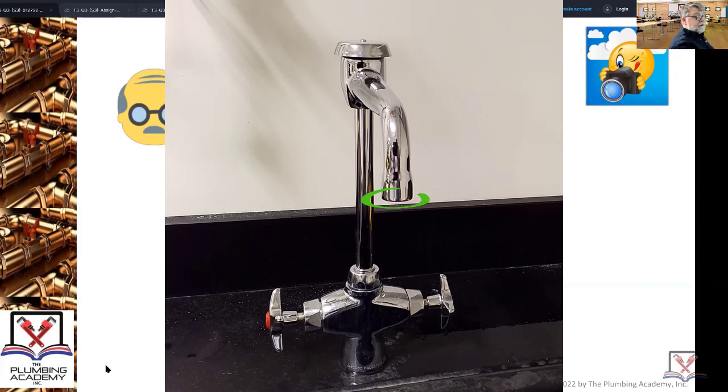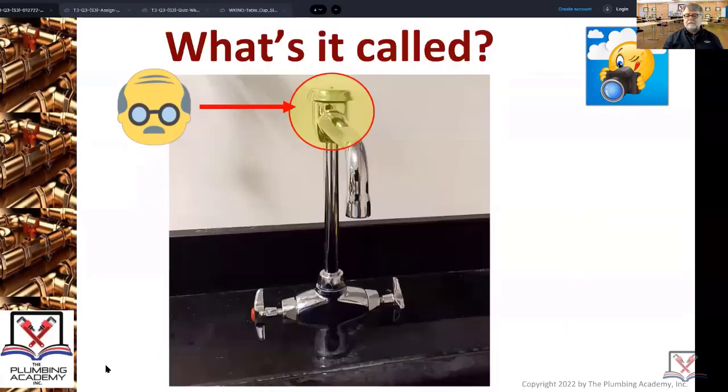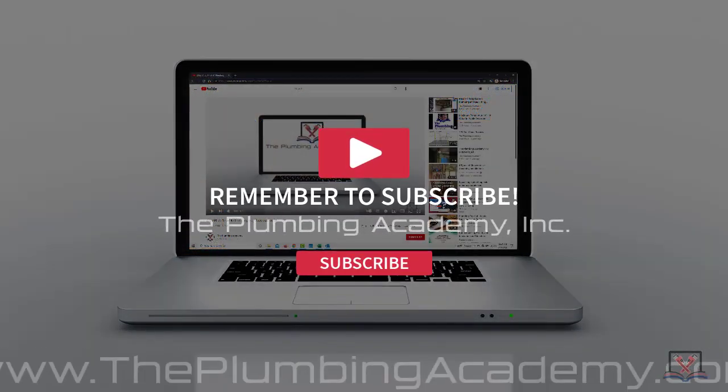As long as it doesn't have a shutoff and a negative pressure begins, it's all going to come pouring out this little bell. But if you put a shutoff on that other side, all bets are off. You could pollute the potable water system.